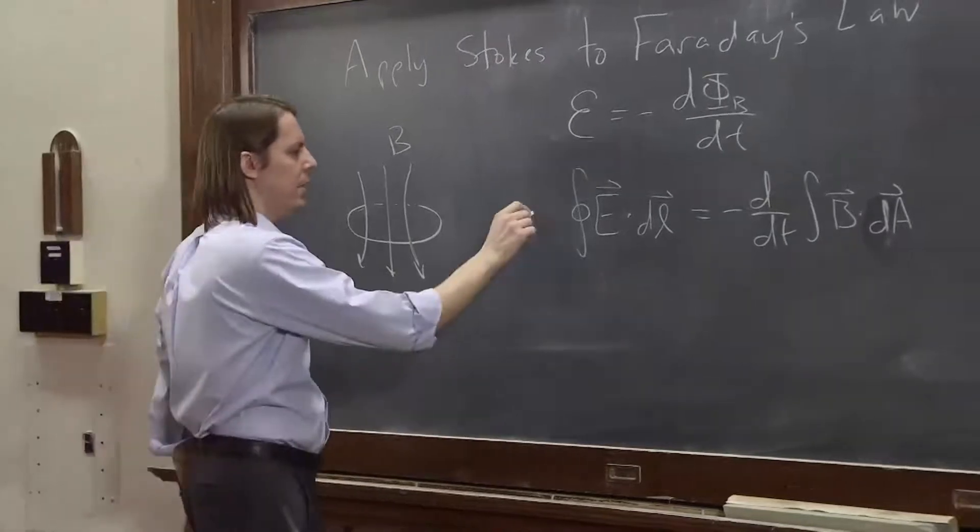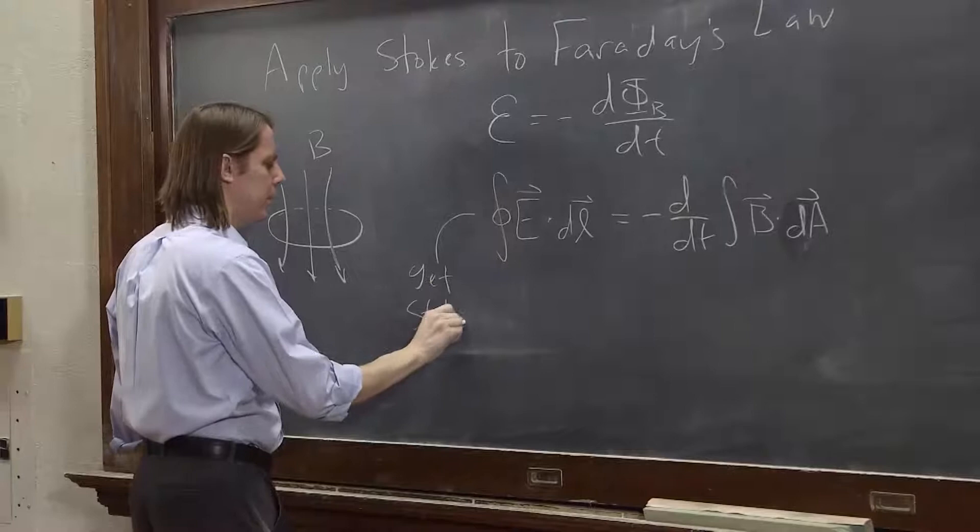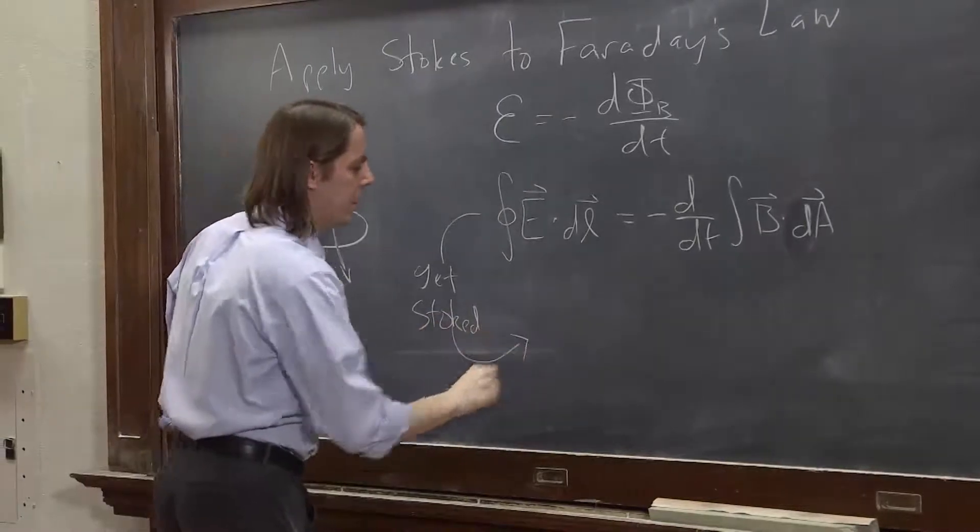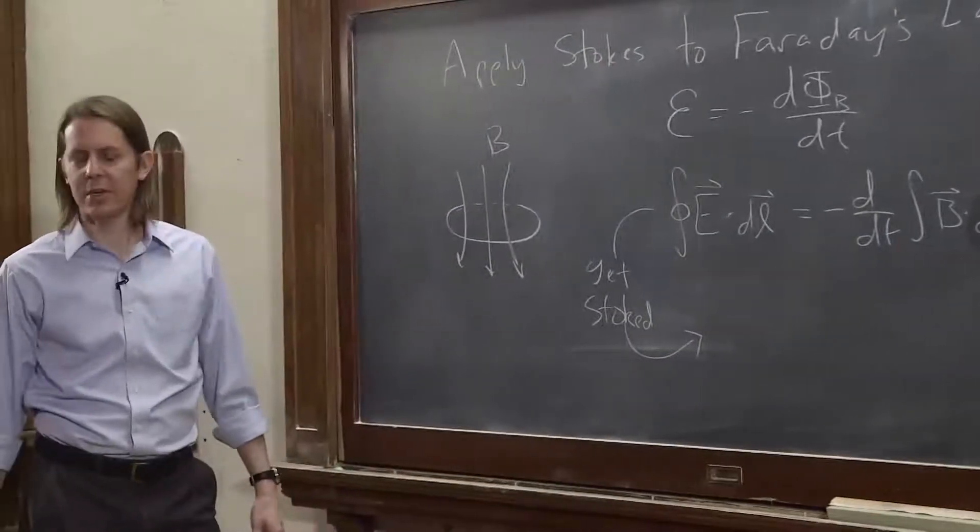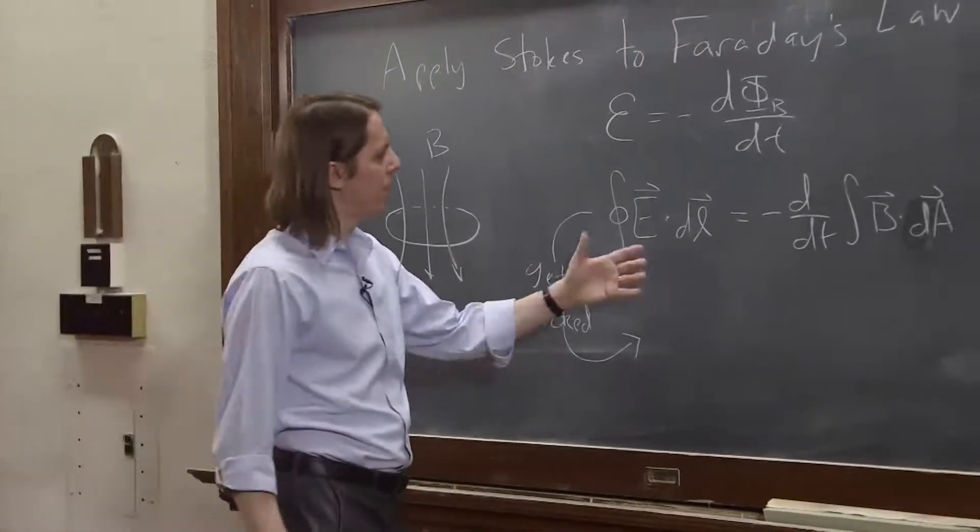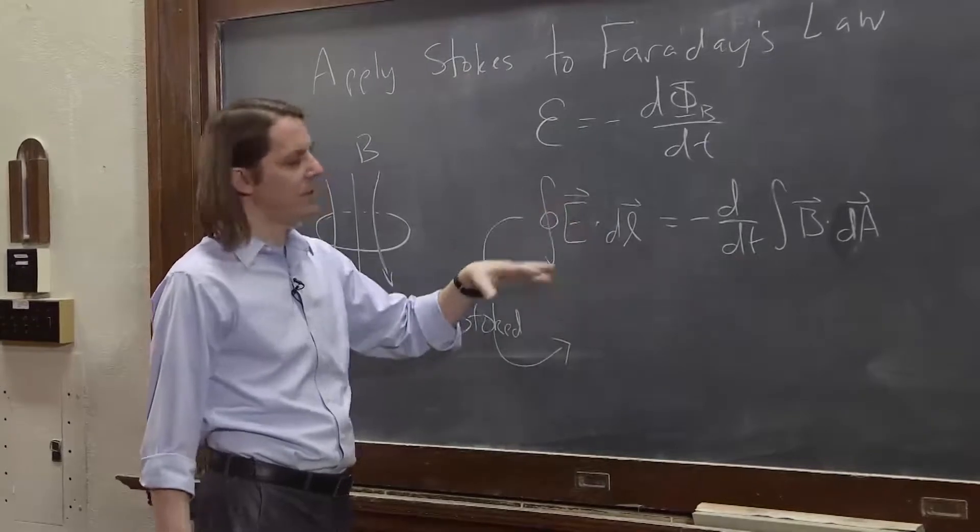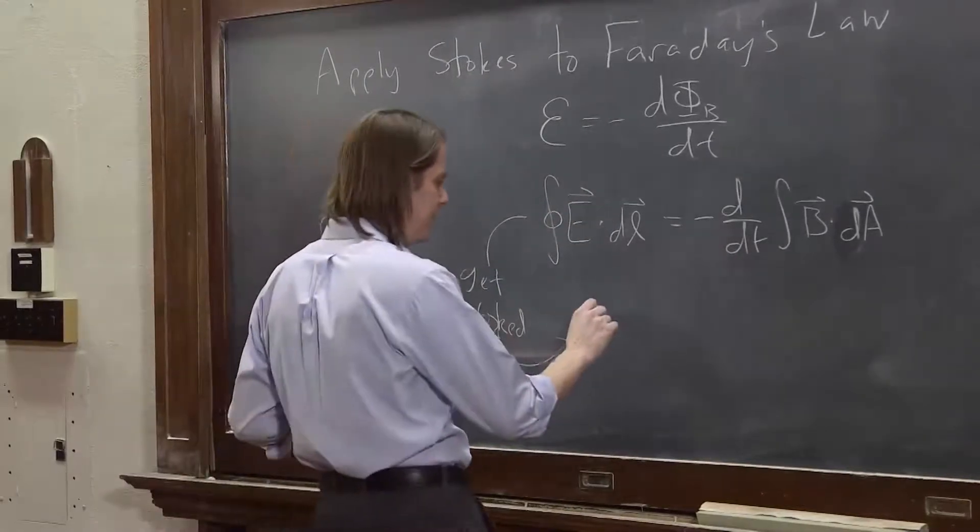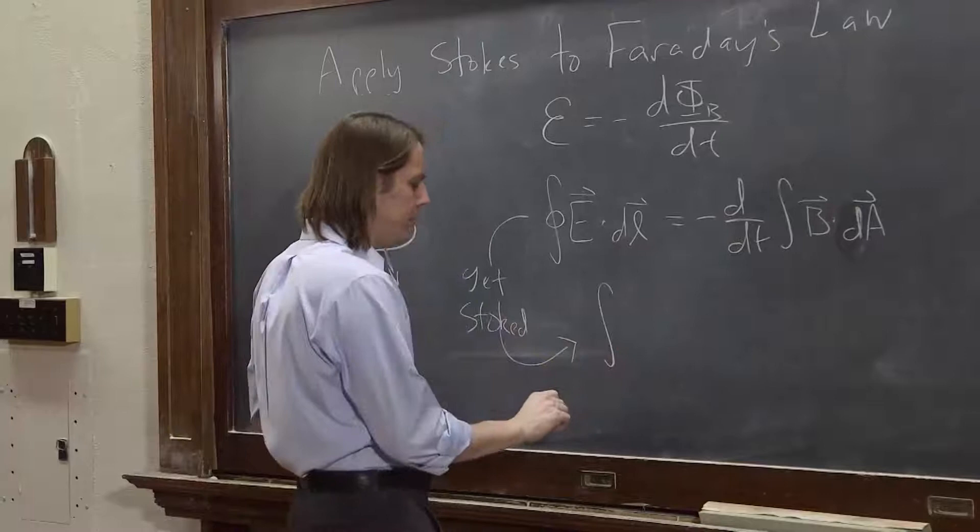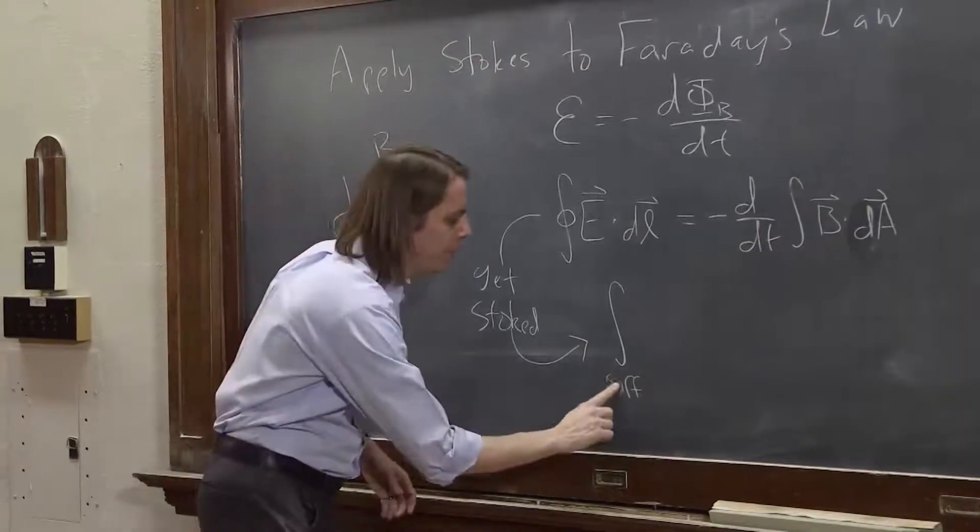All right, so now let's get Stokes, which I think is just a camping slang, I'm not sure where that comes from. And what we're going to do is say, from Stokes' law, we know that the integral around this closed loop of E dot dl must be the same, equal to, the integral of the surface.